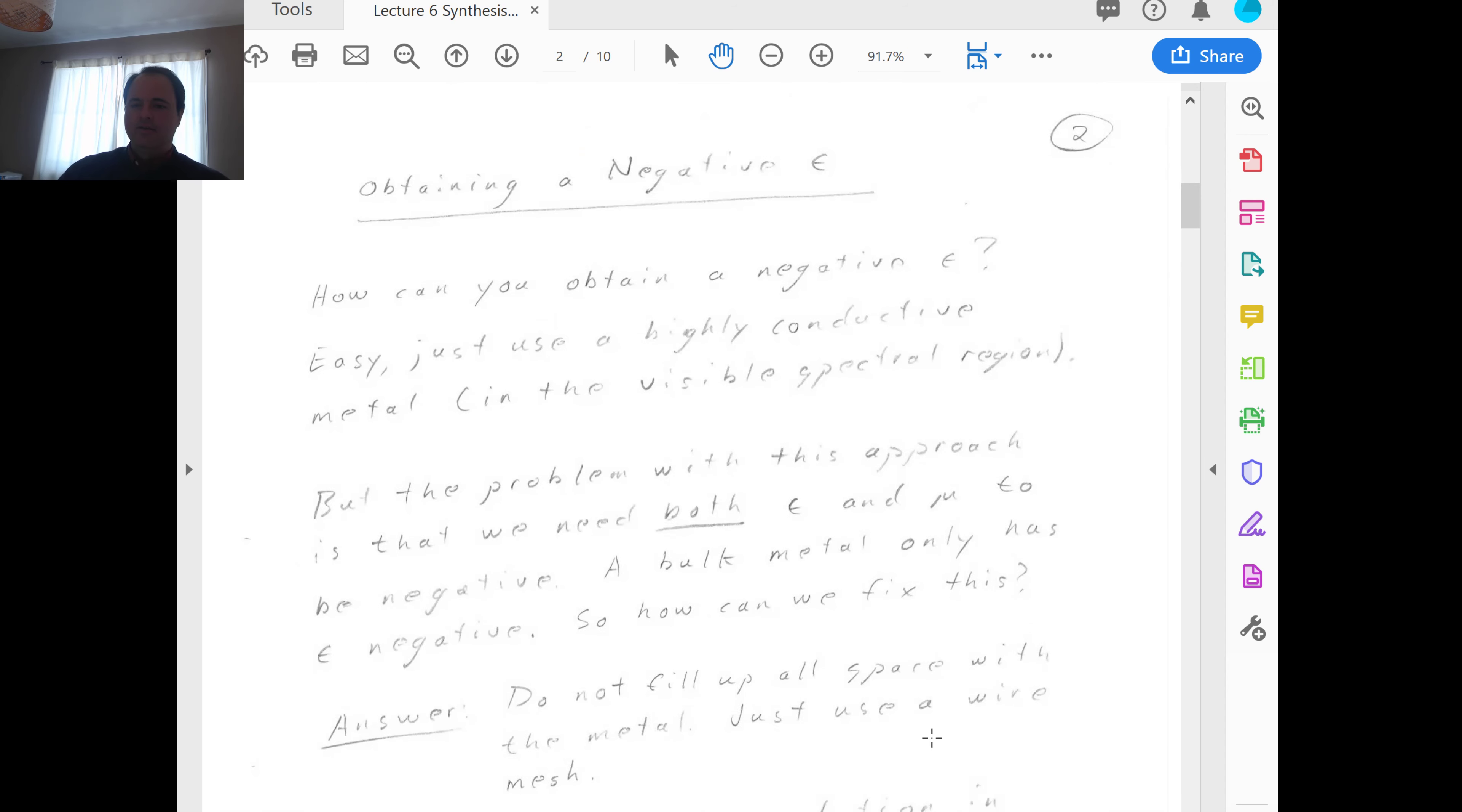So obtaining a negative epsilon. How can you obtain a negative epsilon is the question. Well, the easy answer is, well, you would just say, well, just use a highly conductive metal in the visible spectral region. Everyone knows that that has a highly negative real part to epsilon. But then you'll immediately know that the problem with that approach is that we need both epsilon and mu to be negative. And the metal, while it does have a negative epsilon, it has a positive mu. So a metal by itself, of course, is not a metamaterial. We knew that before.